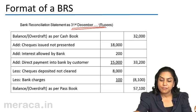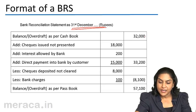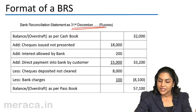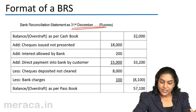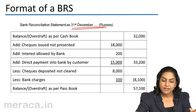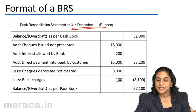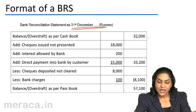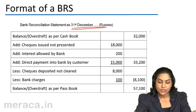We start with either the balance as per cashbook, in which case we end with the balance as per passbook. Alternatively, we can start with the balance as per passbook, in which case we arrive at the balance as per cashbook. Here, we have started with the balance as per cashbook of $32,000.